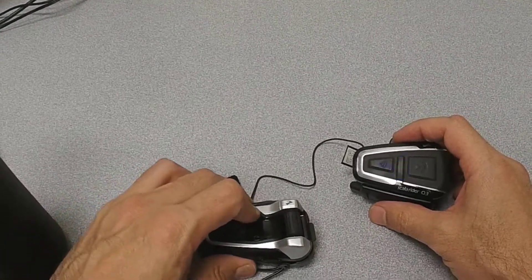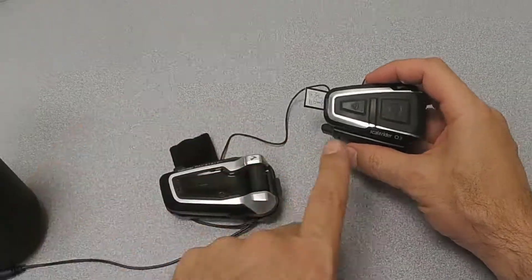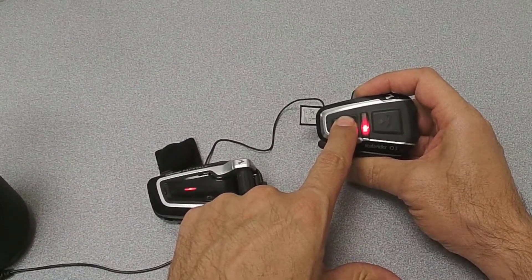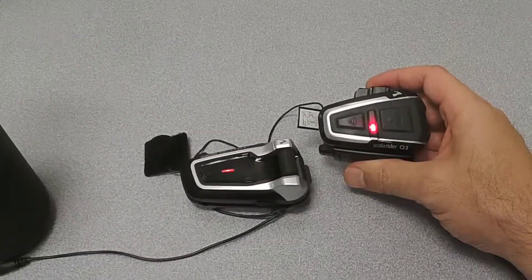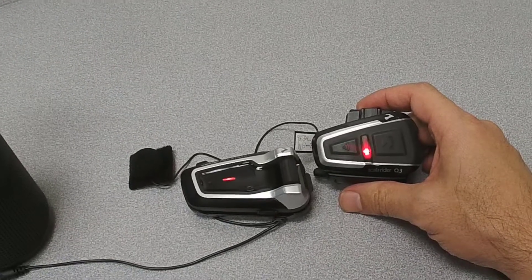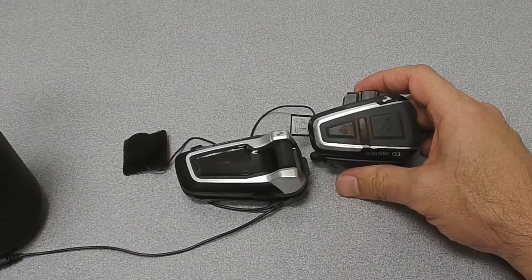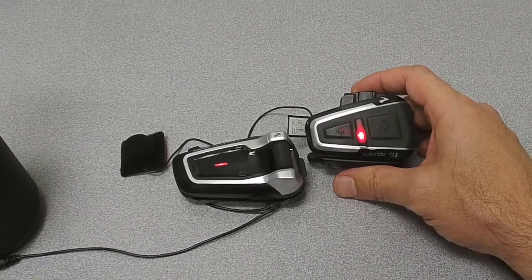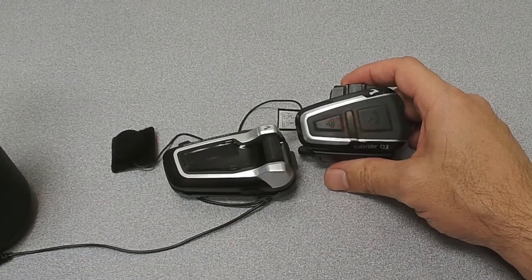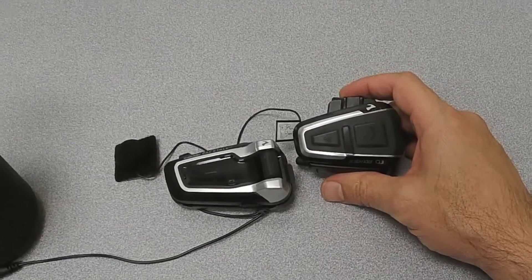And to do so simply push and hold the intercom button. Push and hold. Don't let go. Keep holding. There it goes. Now we just wait for the red lights to stop flashing. It'll happen any second now. Might actually fast forward just a little bit. And we have paired successfully.